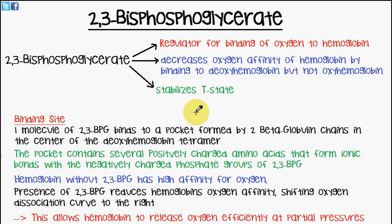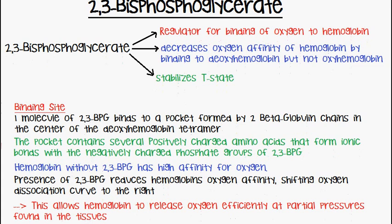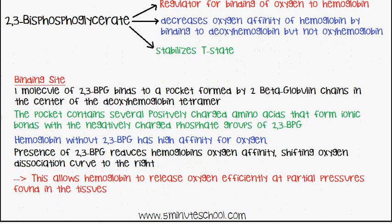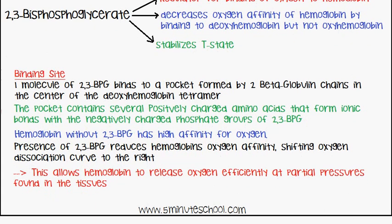The binding site: one molecule of 2,3-bisphosphoglycerate binds to a pocket formed by two beta-globin chains in the center of the deoxyhemoglobin tetramer.